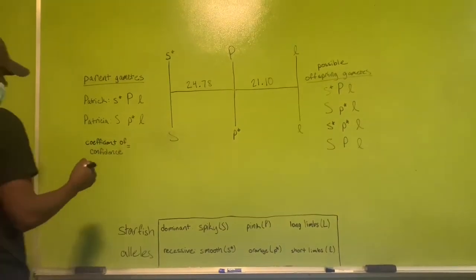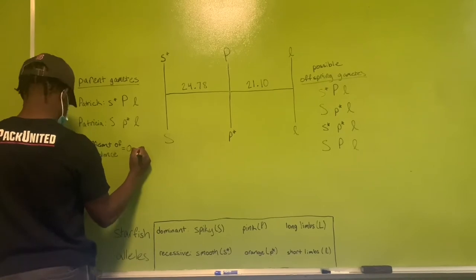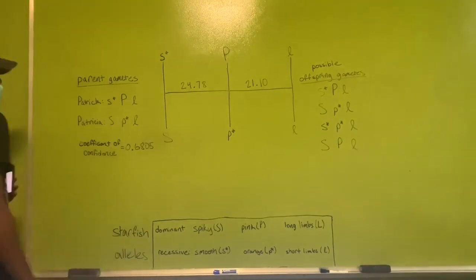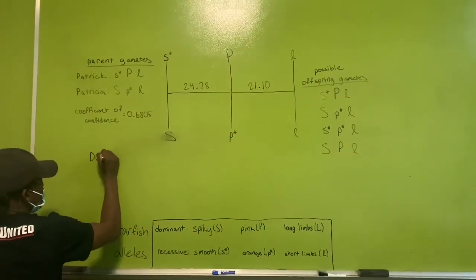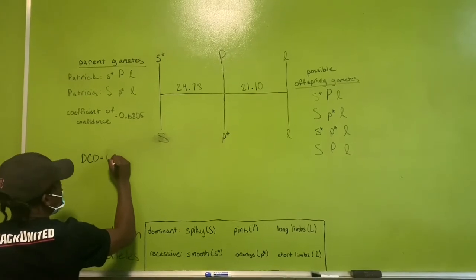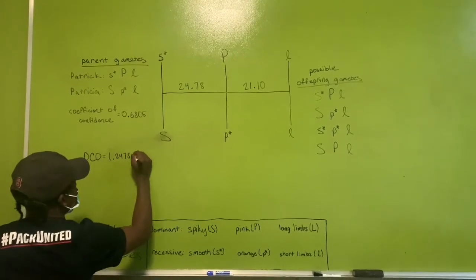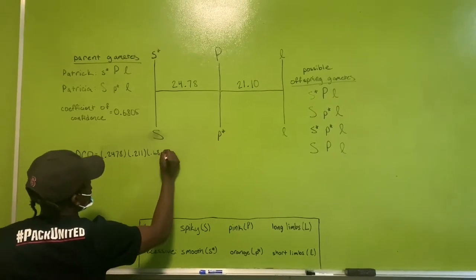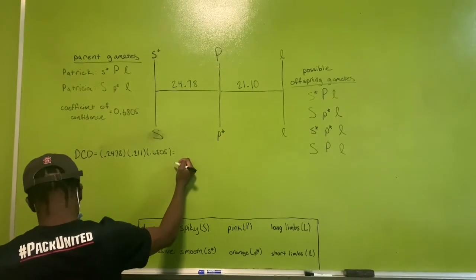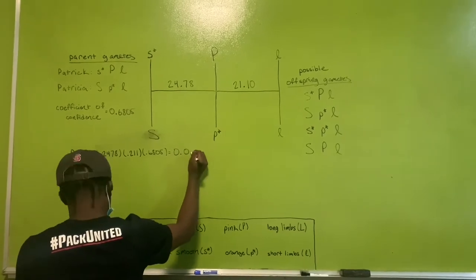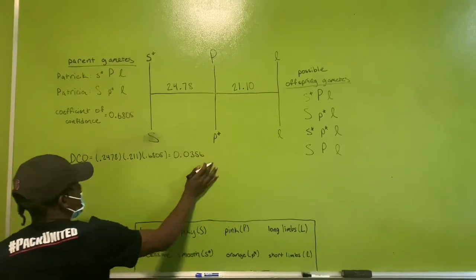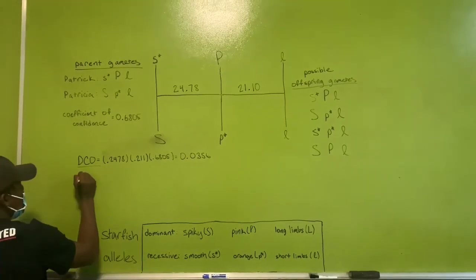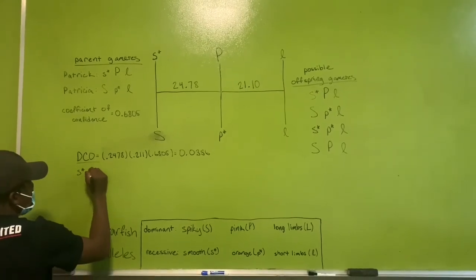Next I calculated the probability of each gamete type with respect to the type of cross. To calculate the probability for a double cross gamete, I multiplied the r1 value, the r2 value, and the coefficient of confidence, then I divided that value by two to calculate the probability of a single double crossed gamete.